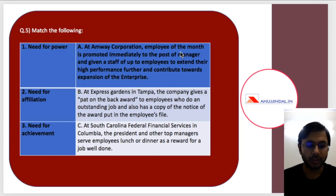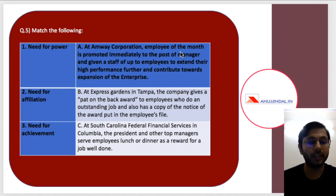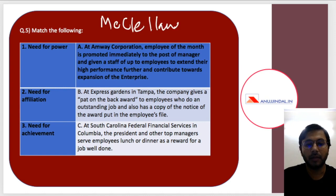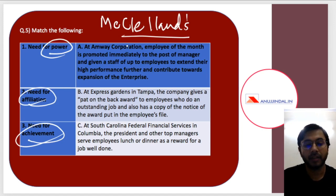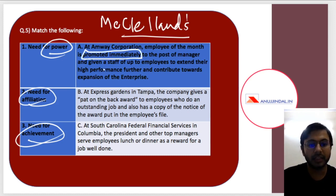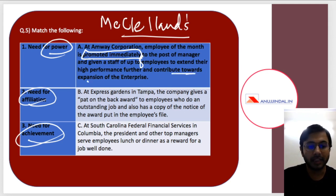The last question is a match-the-following exercise involving McClelland's theory of needs. There are three needs: need for power, need for affiliation, and need for achievement. You have to match them to examples. At M-Way Corporation, the employee of the month is immediately promoted to the post of manager and given a staff of up to 8 employees to extend high performance and contribute toward expansion of the enterprise.